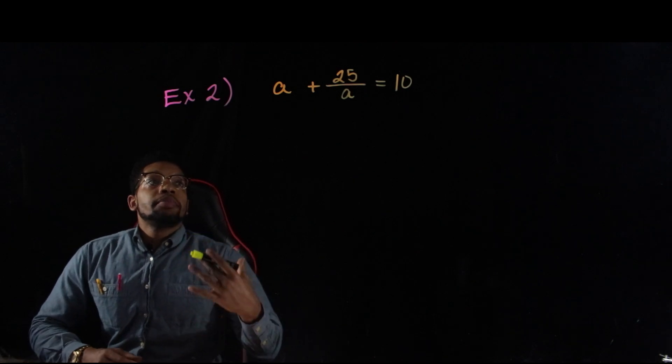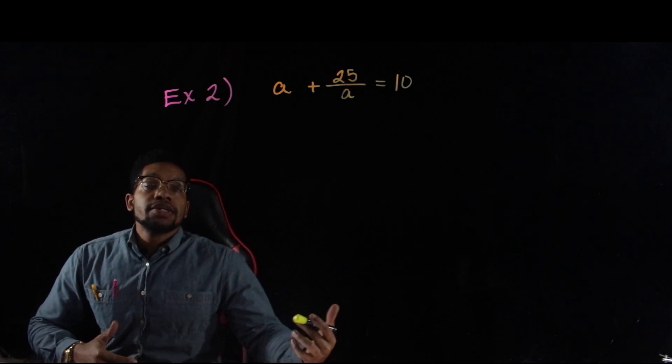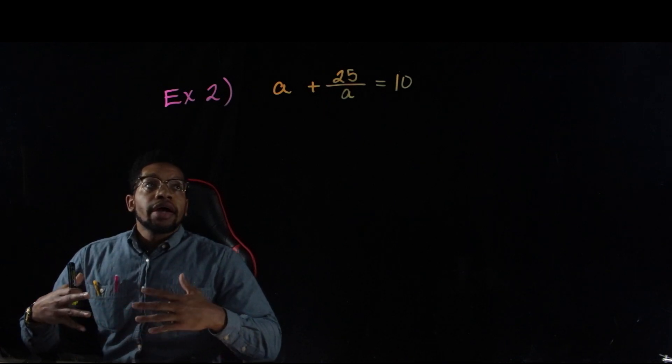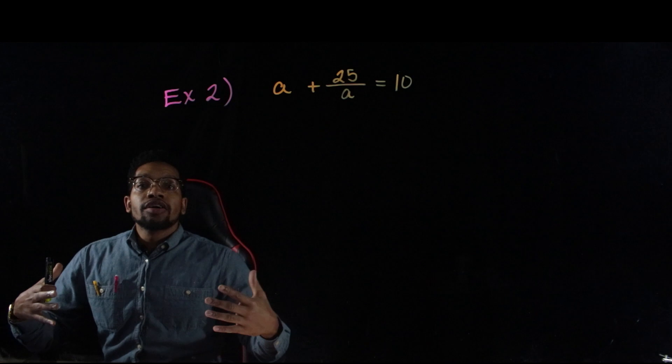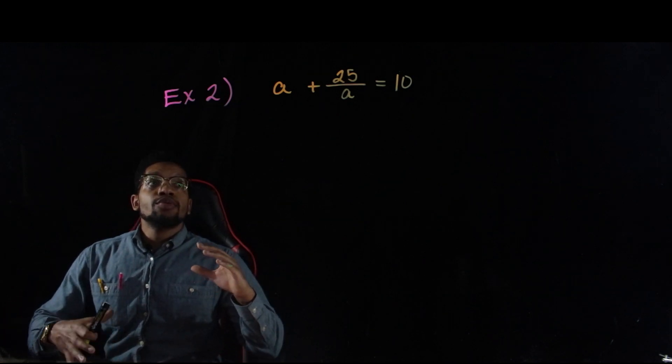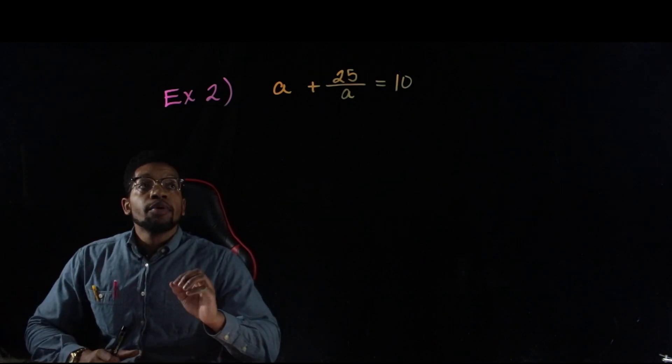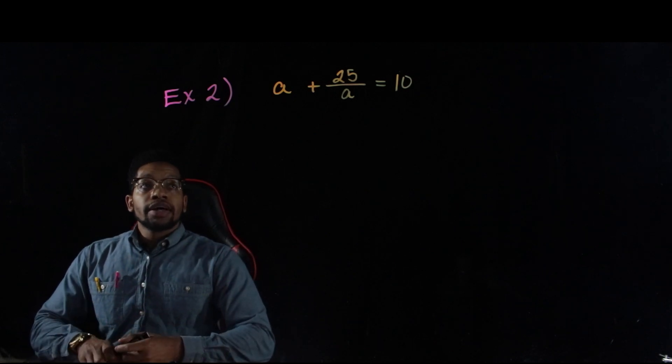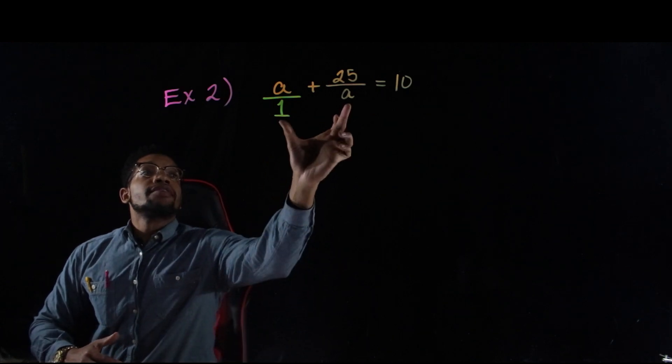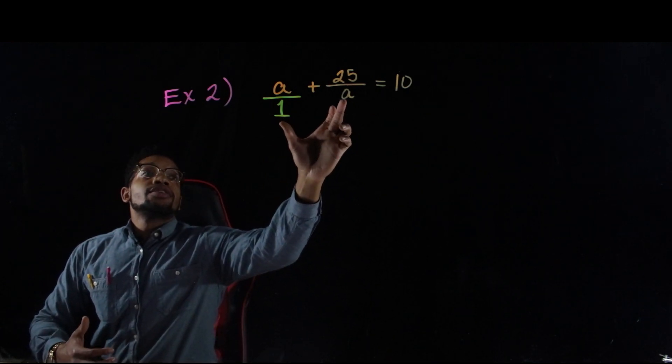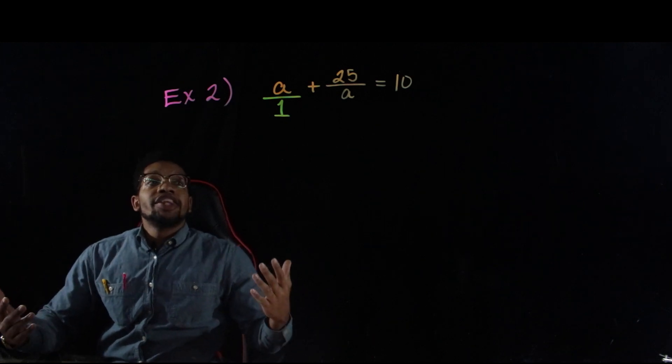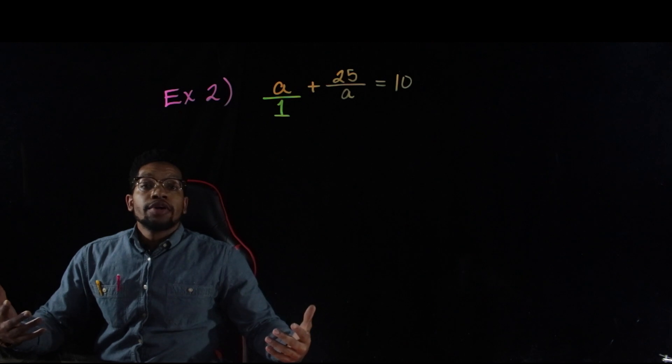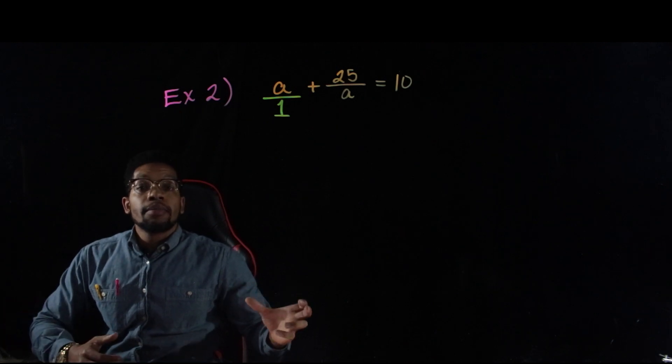For this next example, we got a plus 25 over a equals 10. This is one of those examples where you have two fractions being added together, and so we don't need to cross multiply. But instead, we have to, whenever we add fractions, remember, we can only do so whenever we have common denominators. And so right now, if you want to think of it like this, you're adding two fractions, and obviously our denominators are not common. So, we just got to kind of think and ask ourselves, what can I multiply one denominator by, or both denominators by, to make the denominators be common?